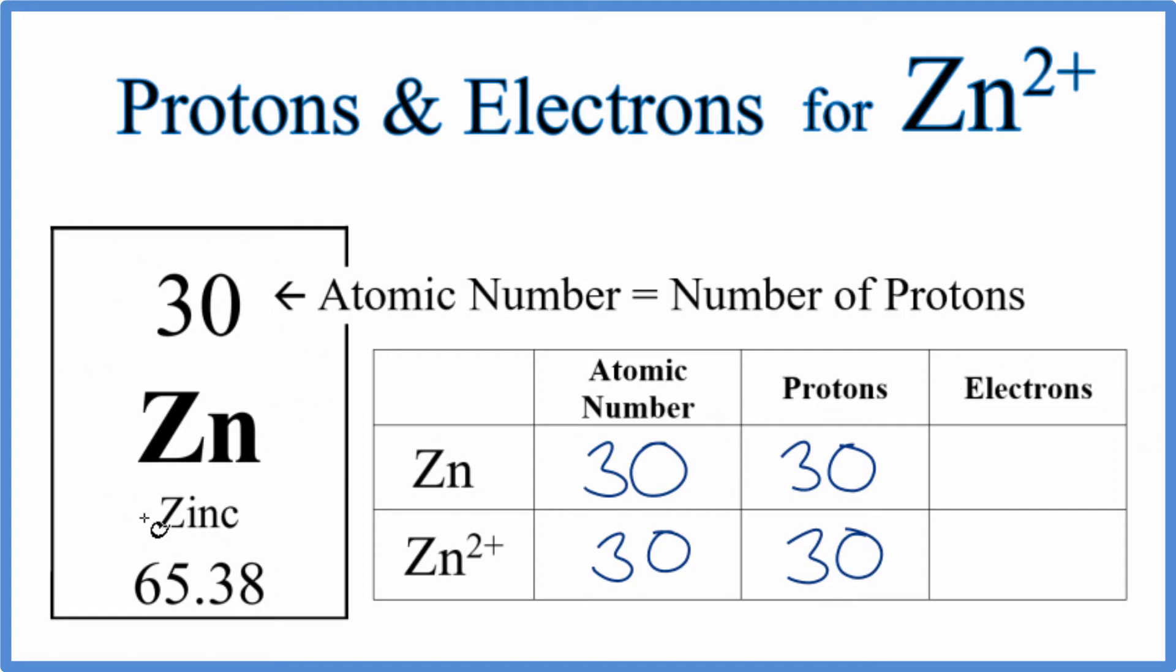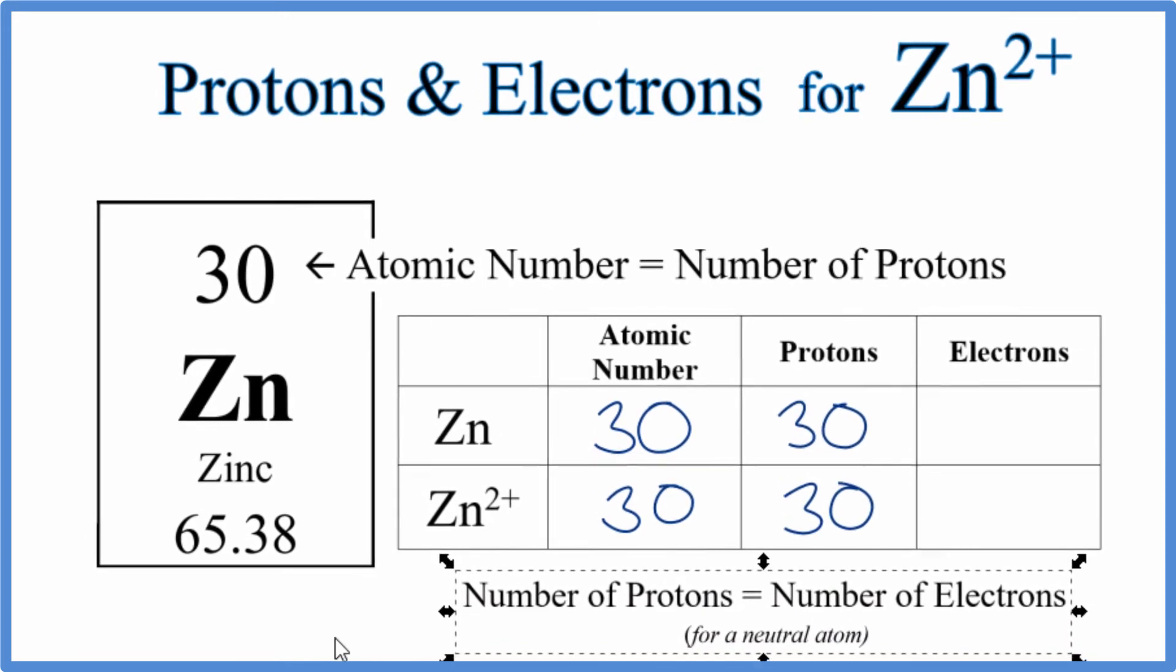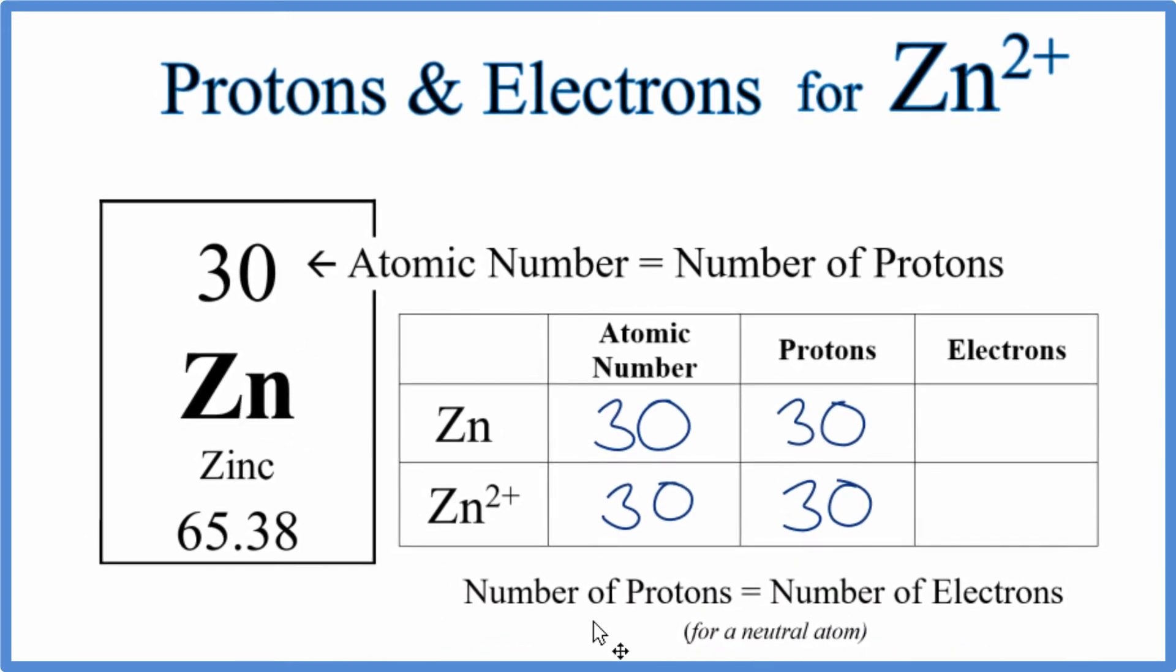For zinc on the periodic table, it's a neutral element. All the elements listed on the periodic table are neutral. In a neutral element, the number of protons equals the number of electrons. So we have 30 protons and 30 electrons.